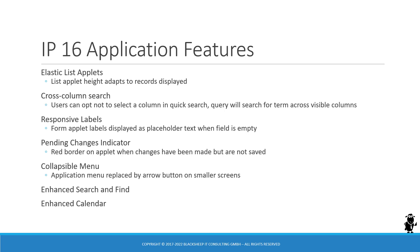Oracle also enhanced the quick search feature present in Open UI applications. If you upgrade from a non-Open UI application, you will find on each list applet a quick search feature allowing a user to select a column and enter a search term, and the application will run a query for that term on that column. In IP16, however, users can opt out of column selection, enter a search term, and the query will search across all visible columns. Be aware that this query can be very taxing on the database and could result in slow performance.